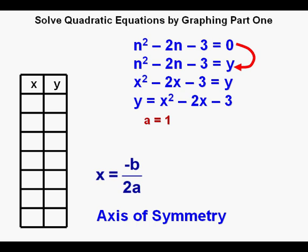In the function, a is 1, since we have 1x². And b is -2, since we have -2x. And c is -3, and that's our y-intercept of -3.